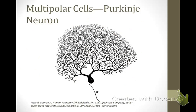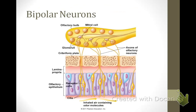Multipolar cells are the most common neuronal cell type in the nervous system, but their morphology can vary widely depending on their function. For instance, Purkinje neurons, like the one shown here, are found in the cerebellum. They have enormous dendritic trees that receive around 150,000 synapses. In contrast, motor neurons, which are also multipolar cells, have a much smaller dendritic tree and only receive around 8,000 synapses.